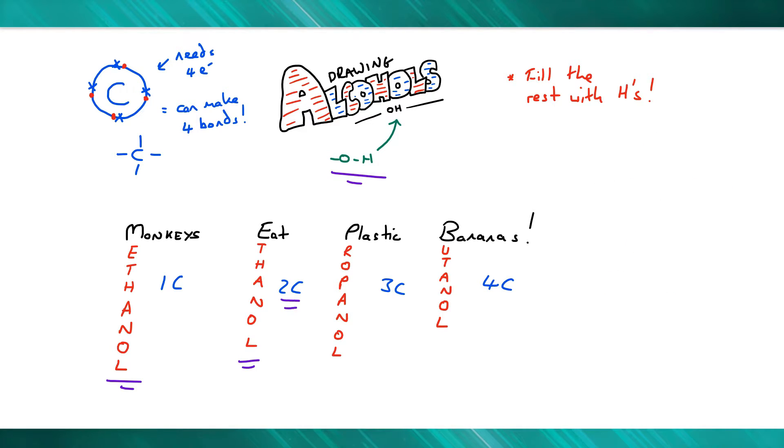Let's try that again with ethanol. Ethanol has two carbons—monkeys eat. Therefore, I put my two carbons in. Each carbon can make four bonds, so I put in four bonds, bearing in mind there's already one between the two carbon atoms. Then I put an OH at the end and fill the rest with hydrogens, which gives C2H5OH.